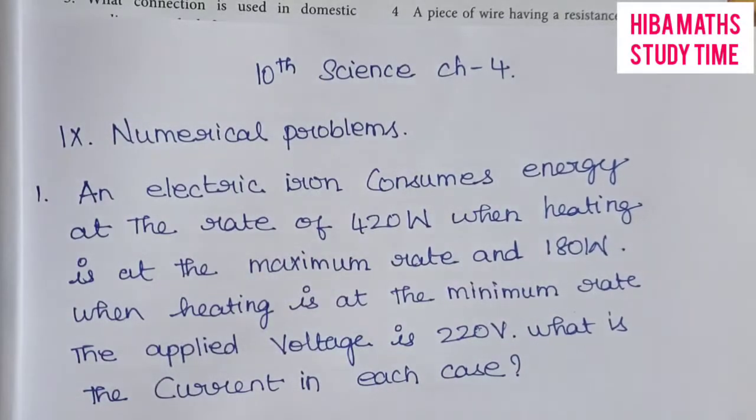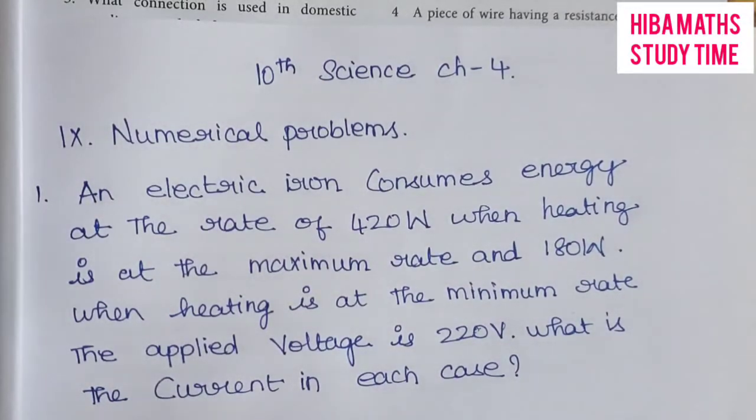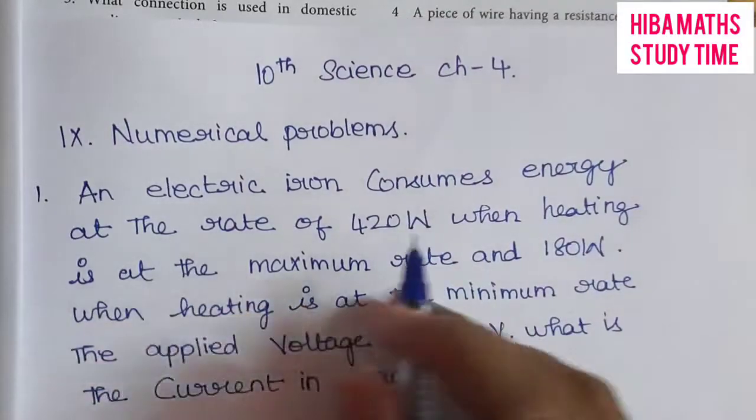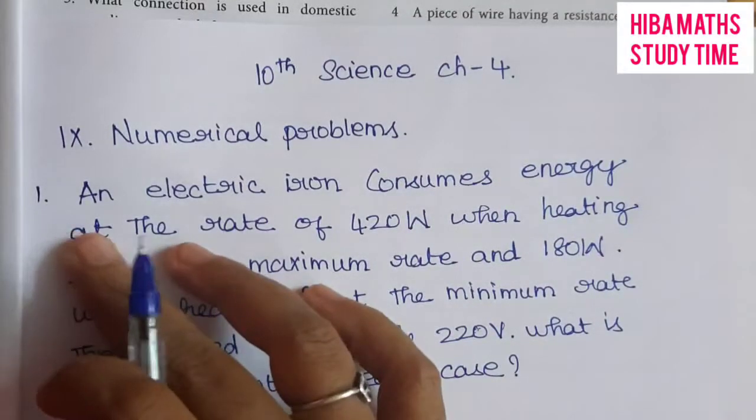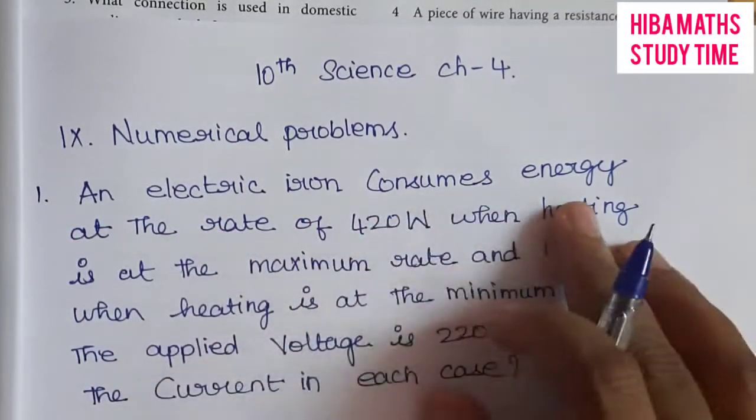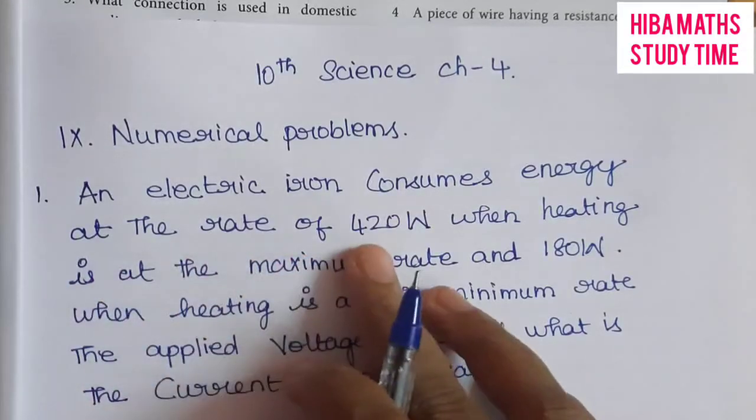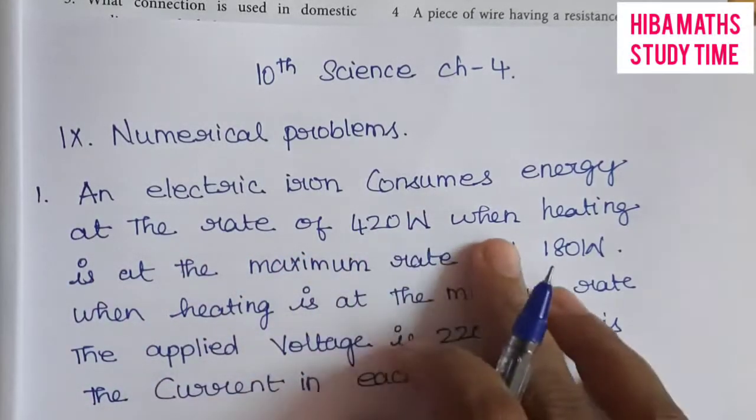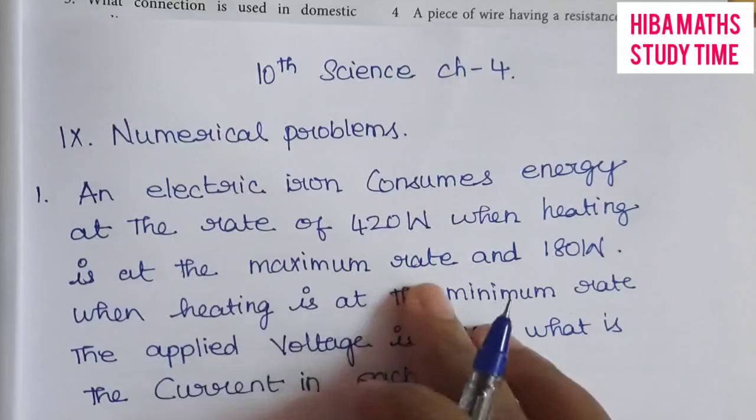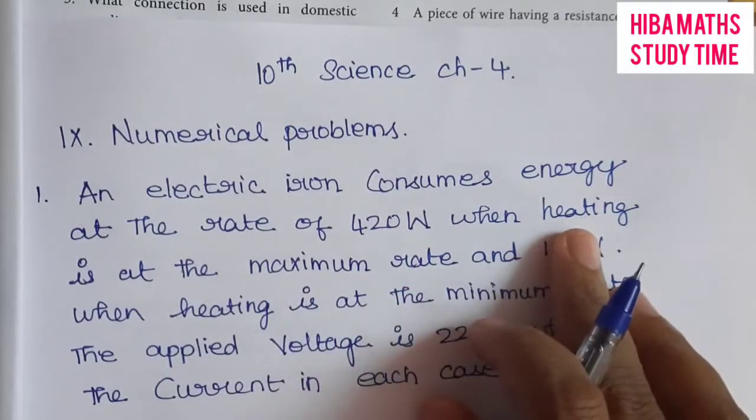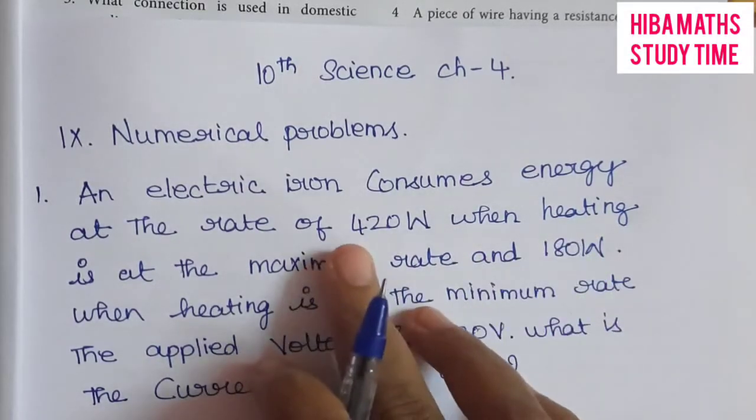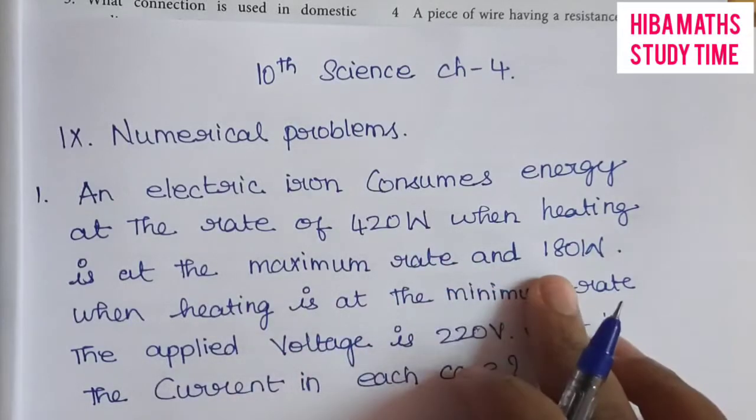Hello students, welcome to Hebamaths study time. 10th standard math chapter 4 numerical problems. First question: an electric iron consumes energy at the rate of 420 watts when heating is at maximum rate.